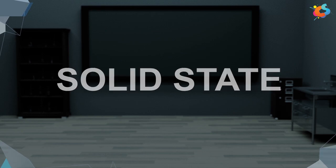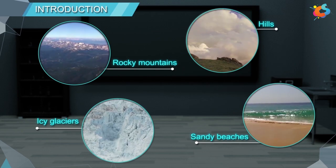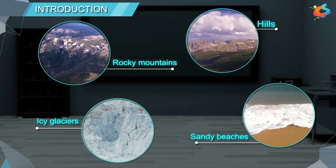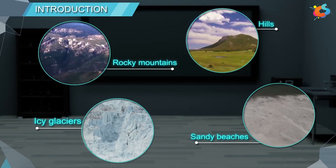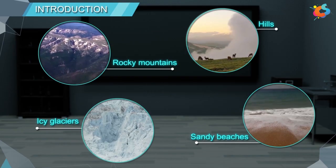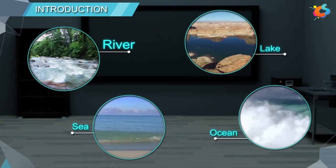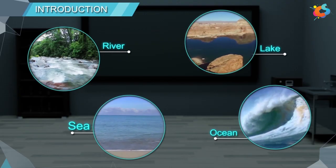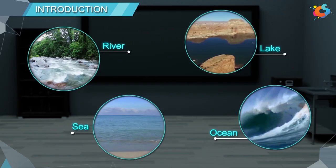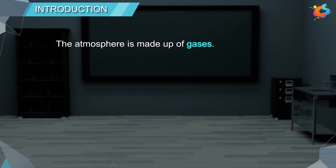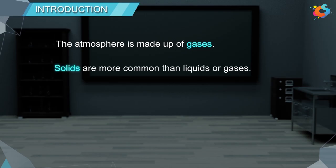Solid state — Introduction. In nature, we come across rocky mountains, hills, icy glaciers and sandy beaches, which all are solids. Rivers, lakes, seas and oceans, which are all liquids. The atmosphere is made up of gases. However, solids are more common than liquids or gases.